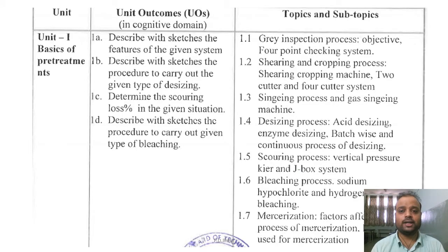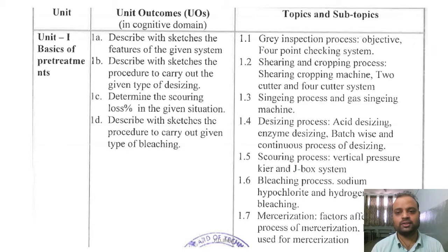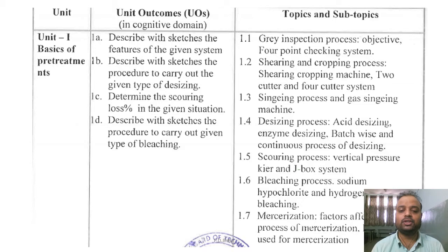Each unit has certain topics and subtopics. Unit 1 has seven topics: grey inspection process, shearing and cropping process, singeing process and gassing process, desizing process, scouring process, bleaching process, and mercerization. Subtopics include objects of grey inspection process, two or four cutting systems, acid desizing, enzymatic desizing, batch-wise desizing, continuous desizing, vertical pressure kier and J-Box, sodium hypochlorite, hydrogen peroxide bleaching, mercerization, and factors affecting mercerization.